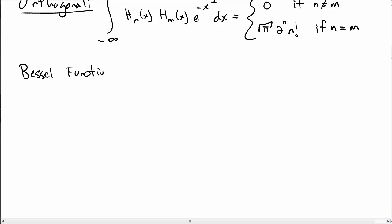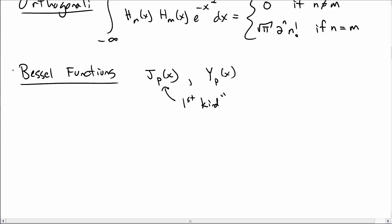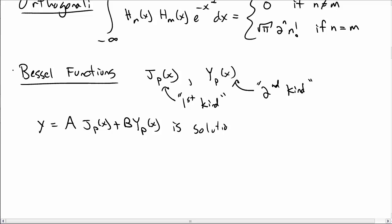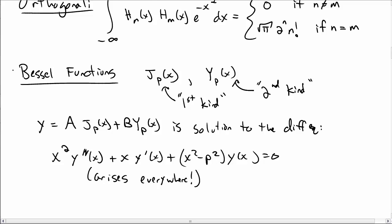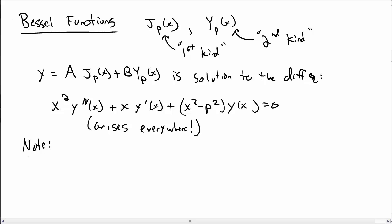Another set of functions are Bessel functions. There are two types: J_p(x), called Bessel functions of the first kind, and Y_p(x), called Bessel functions of the second kind. They arise from the differential equation x²y'' + xy' + (x² − p²)y = 0. This comes up in many different contexts, making Bessel functions very useful. You can always compute them with a computer.